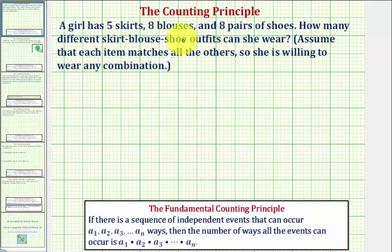A girl has five skirts, eight blouses, and eight pairs of shoes. How many different skirt, blouse, shoe outfits can she wear? We assume that each item matches all the others, so she is willing to wear any combination.